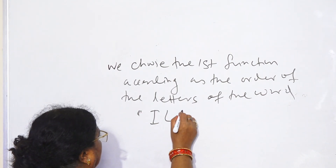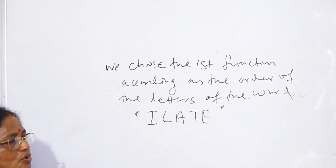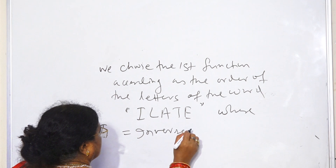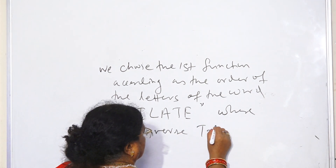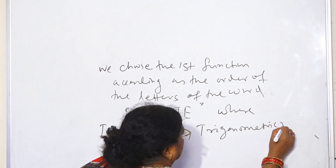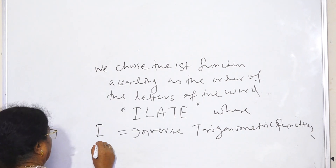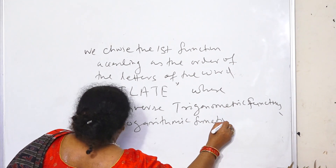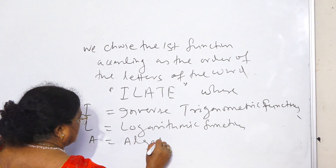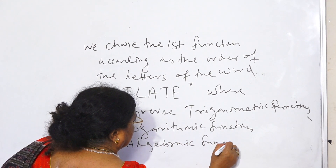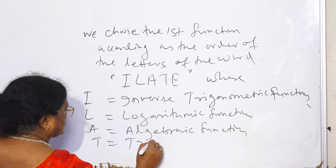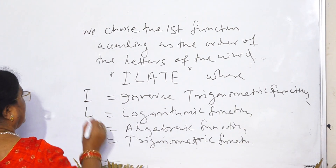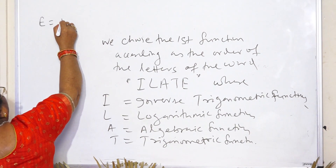Where I equals inverse trigonometric functions, L equals logarithmic function, A equals algebraic function, and T equals trigonometric function.